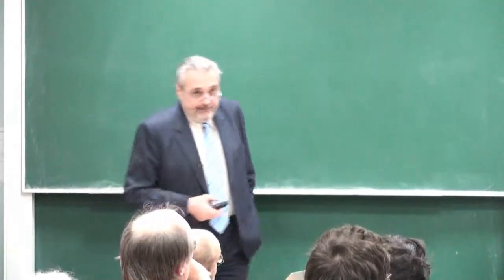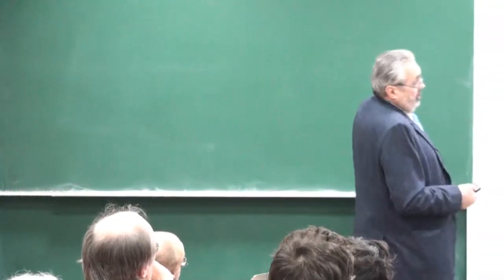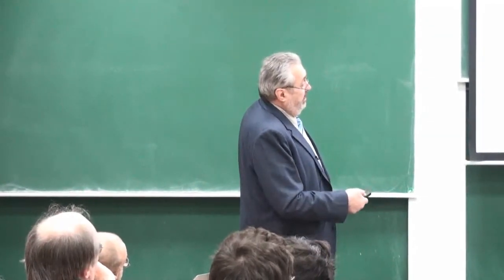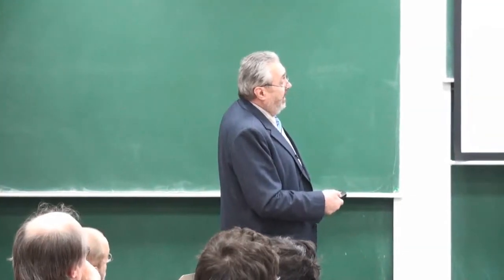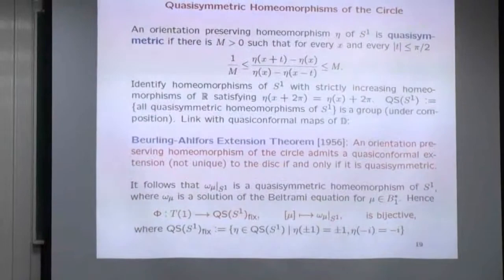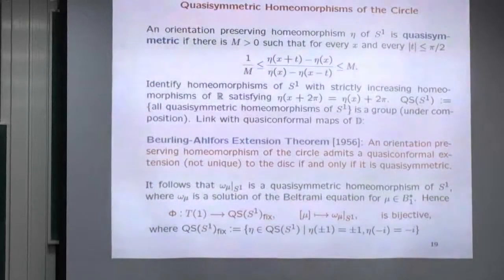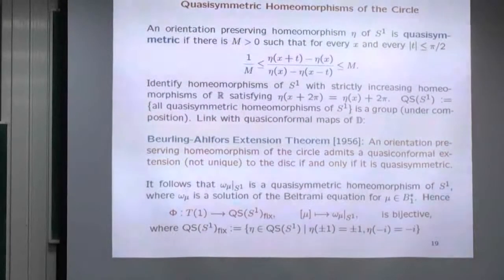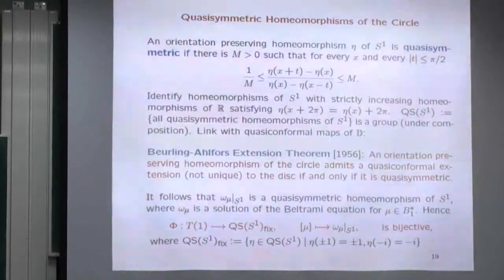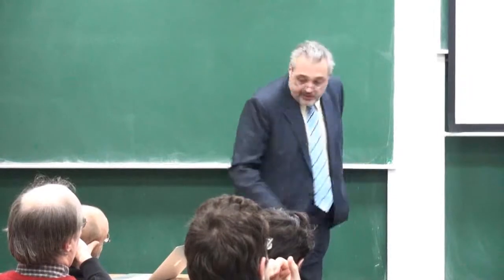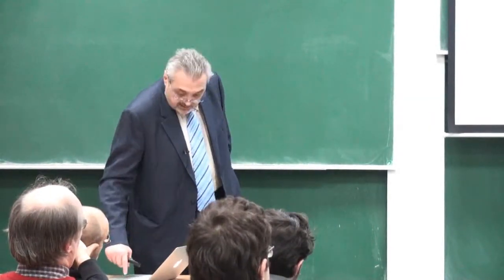Here is a big theorem — the Beurling-Ahlfors extension theorem: an orientation-preserving homeomorphism of the circle admits a quasi-conformal extension to the disk (which is not unique) if and only if it is quasi-symmetric. So quasi-symmetric homeomorphisms are precisely the boundary values of quasi-conformal maps. It follows that ω^μ|_{S¹} is automatically quasi-symmetric. And now I have a bijection between T₁ and the quasi-symmetric homeomorphisms fixing three points (+1, −1, −i): take the element in Teichmüller space, solve the Beltrami equation, restrict to the circle.